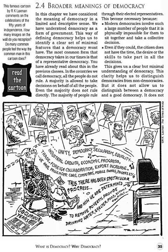Now, why is representative democracy necessary? Because modern democracy involves such a large number of people that it is very difficult for all to sit together physically and take collective decisions. This can be done at the local level — like Gram Sabha and Gram Panchayat — where the population is less. But for the full country, direct decision-making is very difficult. Even if possible, citizens do not have the time, desire, or skills to take part in all decisions. This gives us the minimal understanding that our democracy is representative democracy.